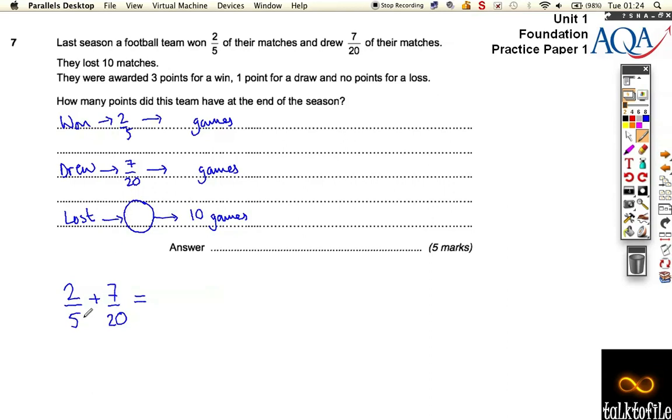Well, to add these fractions up, we need the bottom numbers, the denominators, to be the same. Now, actually, we can get them both to be 20. 5 goes into 20. So if we turn both the bottom fractions into 20, well, this second fraction we haven't had to change. It already is out of 20.